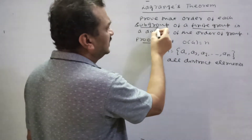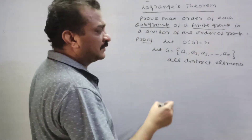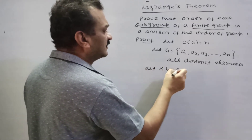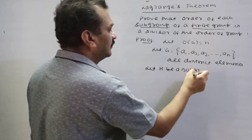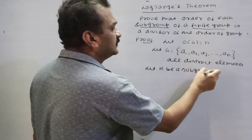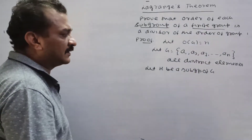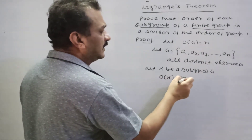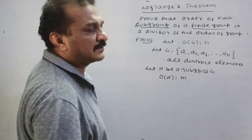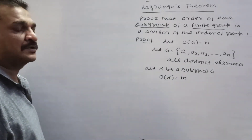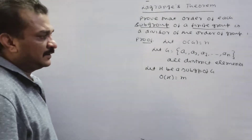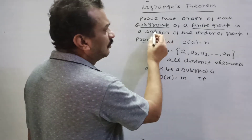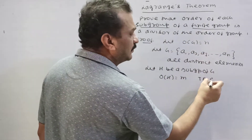Let H be a subgroup of G. We consider the order of H to be m. To prove: the order of the subgroup divides the order of the group, i.e., m divides n.